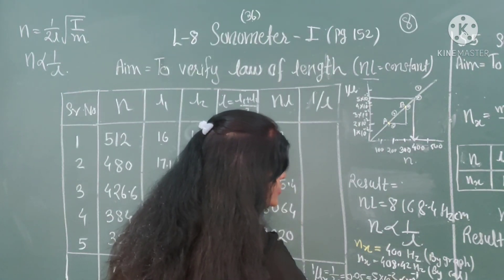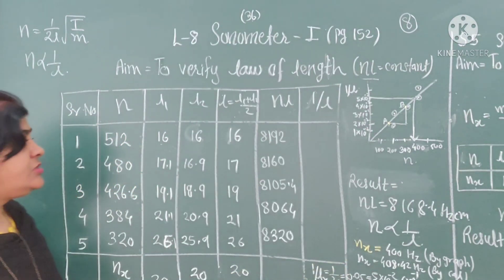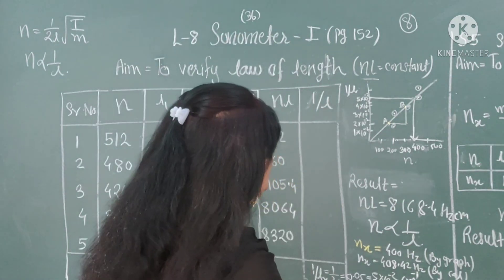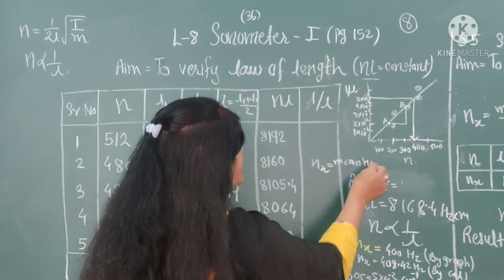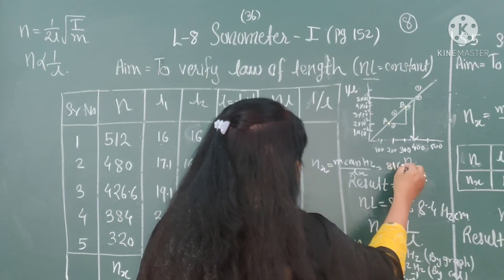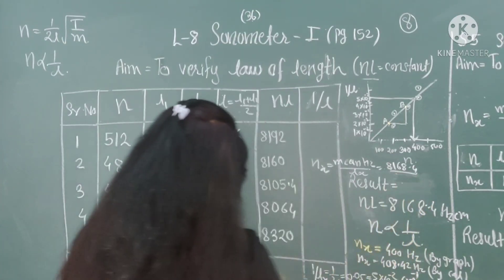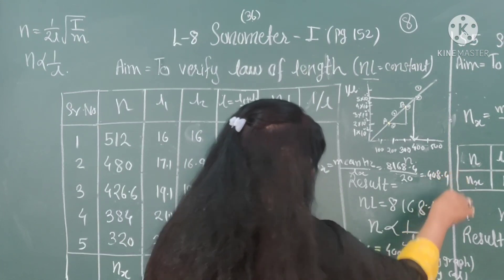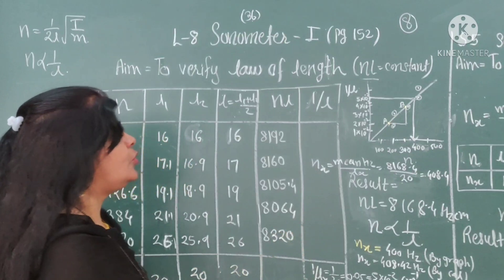That is 5 into 10 to the power minus 2 centimeter inverse. In this way, we find the value of 1 upon LX, which is 5 into 10 to the minus 2. Now using the formula for unknown frequency: NX equals mean NL upon LX. The mean NL is 8168.4, divided by LX which is 20, and this gives the unknown frequency NX equals 408.4 hertz.